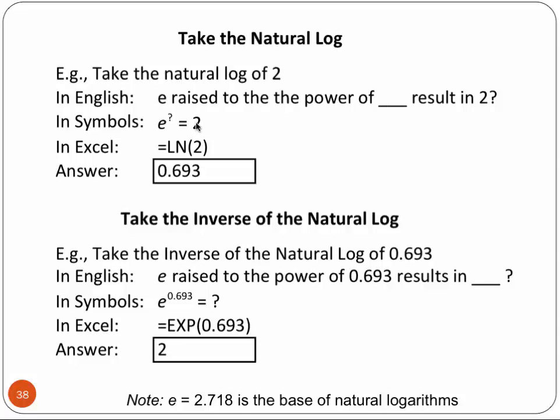Now then we can take the inverse of that. So in English, the question would be e raised to the power of 0.693 results in what number? So we take the inverse natural log by using our exponent function in Excel. We give it that power for e and then it will tell us that the value is 2. So here, this is an example of going and taking a natural log and here is the advantage of reversing that, taking the inverse natural log.